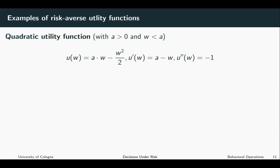Here I want to give you three examples of popular utility functions often used to model risk averse behavior. Let us start with the quadratic utility function, which was very popular in finance applications. Your utility is equal to a times your wealth minus your wealth squared over two. If you take the first derivative with respect to w, your wealth, you get a minus w.